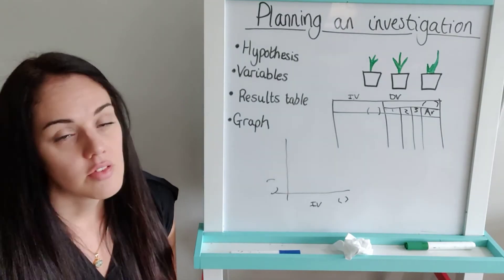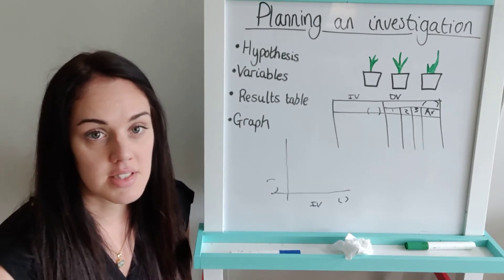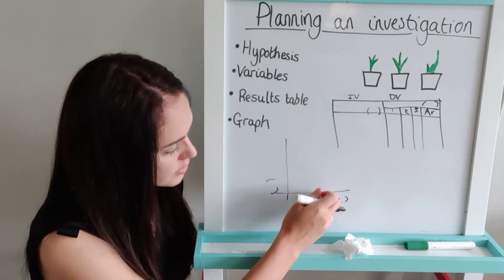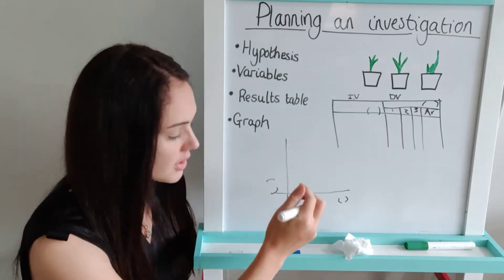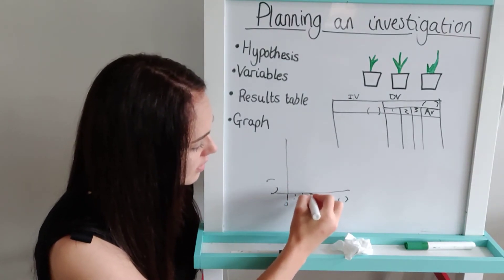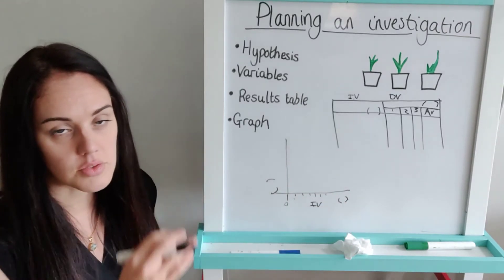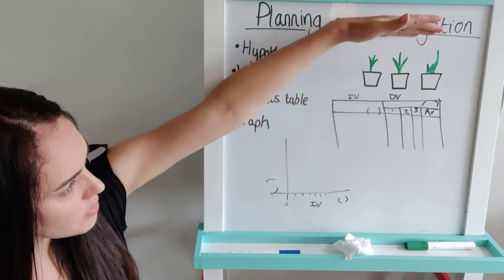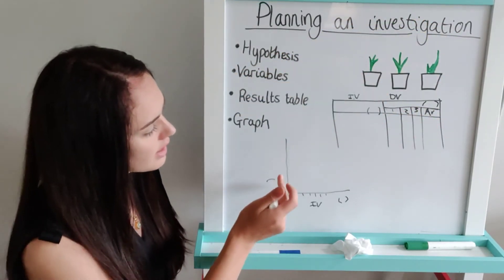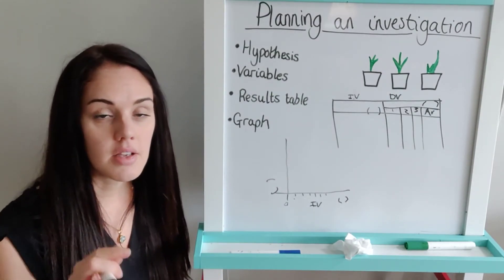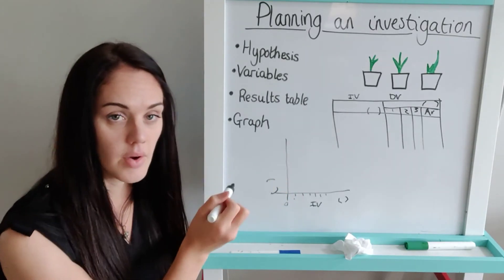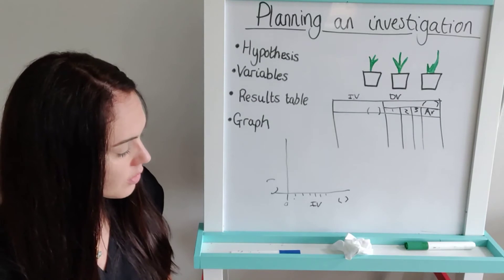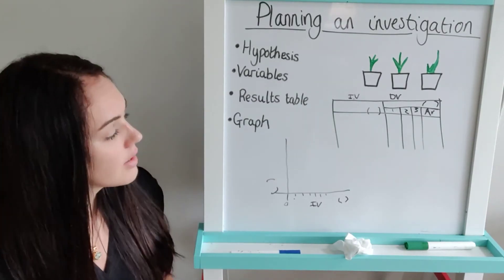For the vertical axis, find your highest average value and make sure the scale goes up to that, using an evenly spaced scale — you can go in 1s, 2s, 5s, or 10s, whichever fits best. It will be a bar chart instead of a line graph if your independent variable consists of separate categories rather than a number scale — for example, different types of plants like sunflower or cress would be separate categories along the bottom, making it a bar chart.